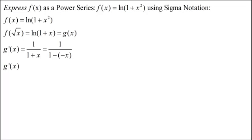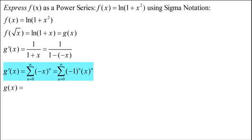Now that can be written in sigma notation as the sum of (-x)^n from n=0 to infinity. And that can be written as (-1)^n times x^n.